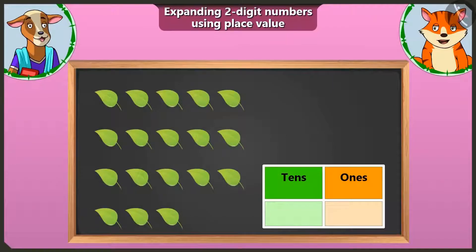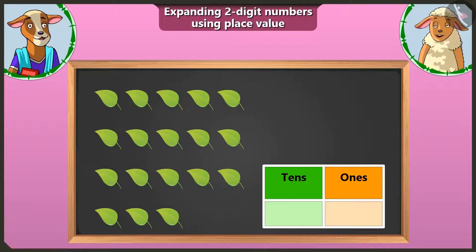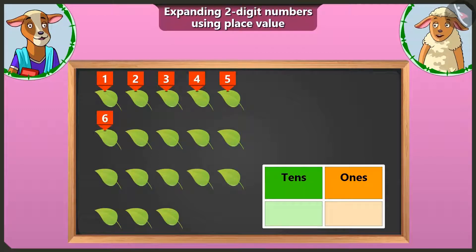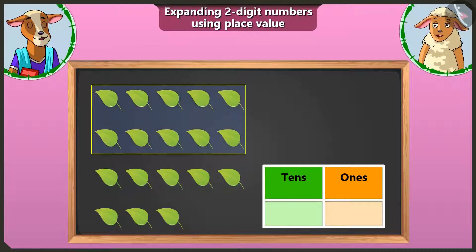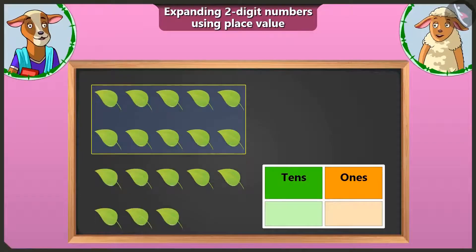Now look, there are some leaves here. Who will make their groups and write it? I will write. Alright, both of you do it one by one. First, I will make a group of ten leaves. One, two, three, four, five, six, seven, eight, nine and ten. I have made a group of ten like this. Now there is one group of tens here, so we will write one in the tens box.